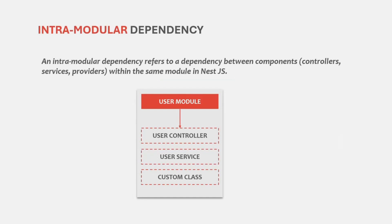First, we have intramodular dependency. An intramodular dependency refers to a dependency between the components within the same module in NestJS. For example, let's say we have a user module. For that user module, we have the user controller, user service, and custom classes. Now let's say this user controller is dependent on this user service. So in that case, we would want NestJS to inject an instance of this user service inside this user controller. Now both user service and user controller belong to the same module, and this is called intramodular dependency.